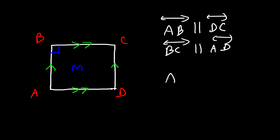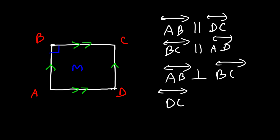Here we have a right angle, so we can say that line AB is perpendicular to line BC. These two intersecting lines AB and BC intersect at point B and both exist in plane M, so they are coplanar lines. We can also say that DC is perpendicular to BC because they form a right angle there as well.